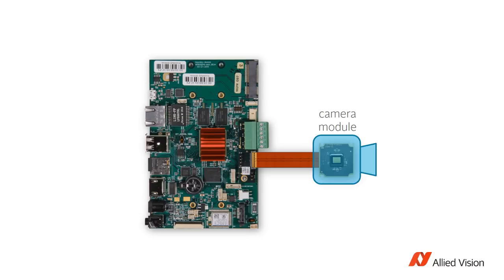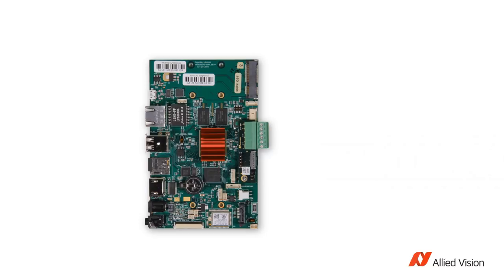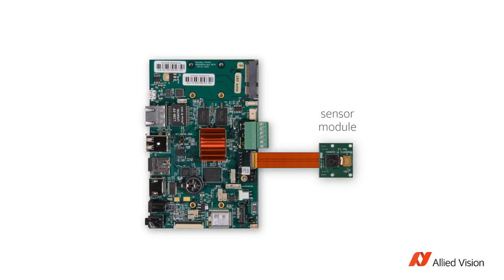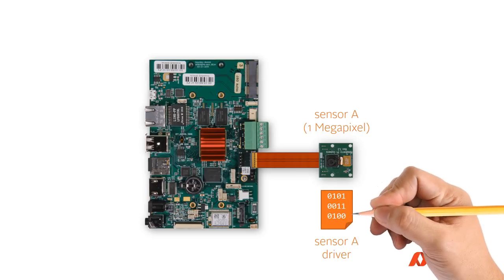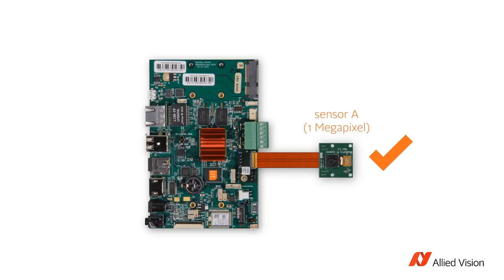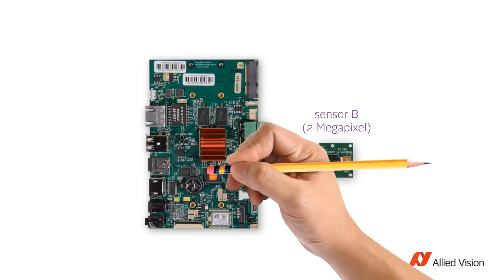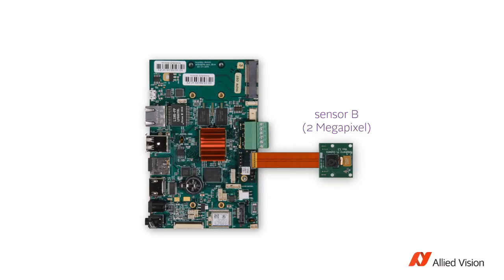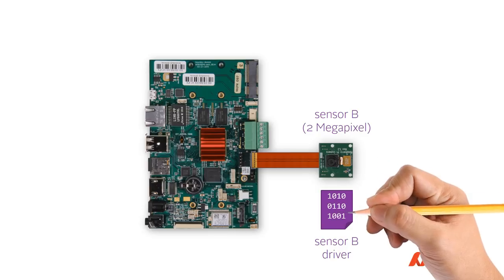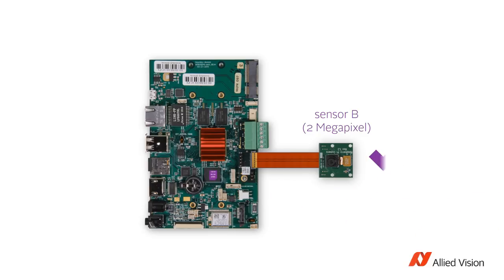On the integration side, a sensor module will be far less flexible than a camera module, because each sensor requires a specific driver. For example, if you design your system with sensor A, a 1 megapixel image sensor, you will need to write and install a specific driver for sensor A to make your sensor module communicate with your processing board. If at a later point in time you decide to upgrade your system to sensor B, a higher resolution 2 megapixel sensor, you will need to start the sensor integration all over again — remove sensor A's driver, write a new driver for sensor B, and install it on your host processor.